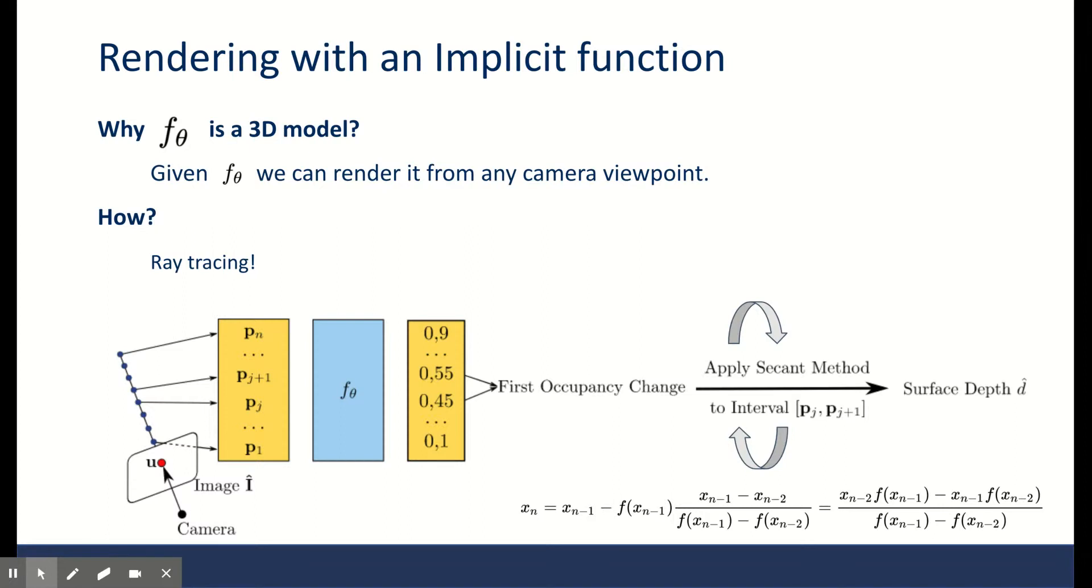After we found the two closest points to tau, then to find the exact root, we use an iterative algorithm called the secant method to find the root. The secant method requires two initial guesses, and we provide those, and it returns the exact root for F_theta equals tau. Because in order to trivially backpropagate through this secant method, we would need to unroll it, which would be really costly. So this is another red flag. We have two red flags: the argmin and the iterative method. But at the end, we find the root point, or in other terms, the surface depth for pixel u.